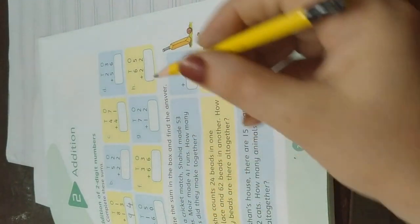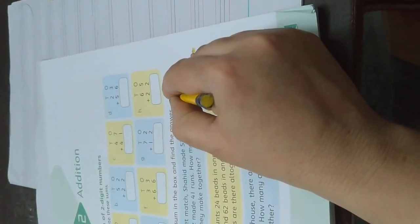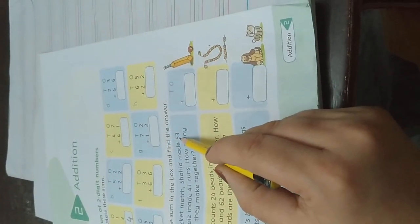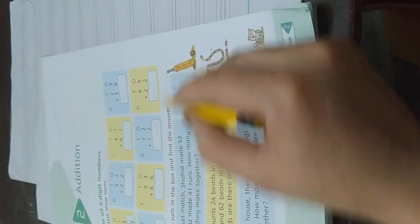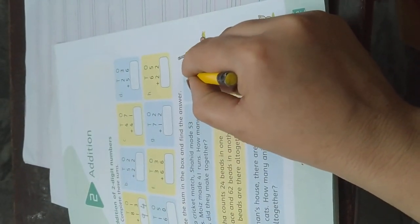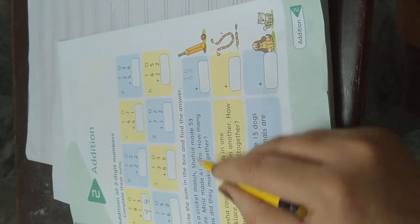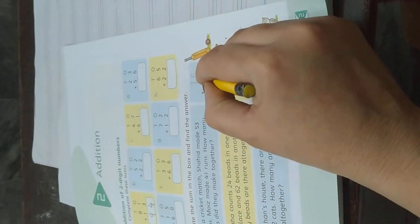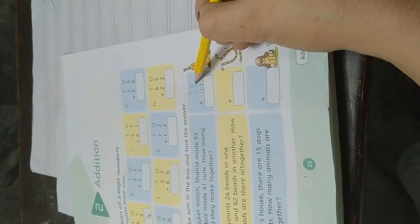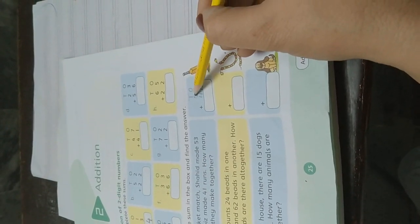First we will put the place value: ones and tens. Then we will take this 53. Shahid made 53 runs. And then Moise made 41 runs. So in one column we have three ones and one, and in ten column we have five tens and four tens.